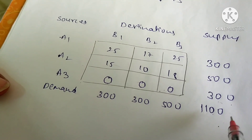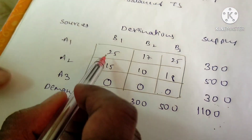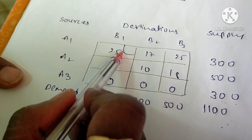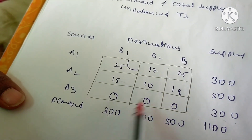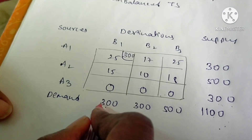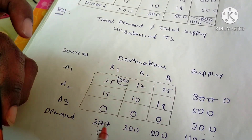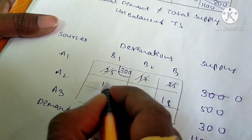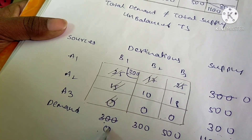Next, apply the northwest corner method. Northwest means starting from the top-left corner. From the corresponding supply and demand, allocate the least number. Here both sides have the same number, so allocate 300. Deduct from both sides: 300 minus 300 equals zero on both. Leave that complete row and complete column.